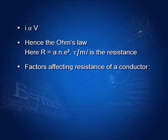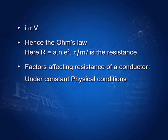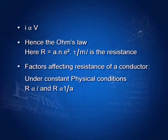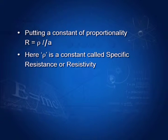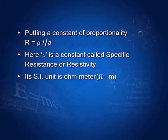Factors affecting resistance: under constant physical conditions, resistance is directly proportional to the length of the conductor and inversely proportional to the area of cross section. A longer wire has larger resistance; a finer wire also has higher resistance. Combining these, R is directly proportional to L/A. Putting a constant of proportionality ρ, we get R = ρL/A. ρ is called resistivity or specific resistance, with SI unit ohm-meter. From R = ANe²τ/(ML), we get ρ = M/(Ne²τ).